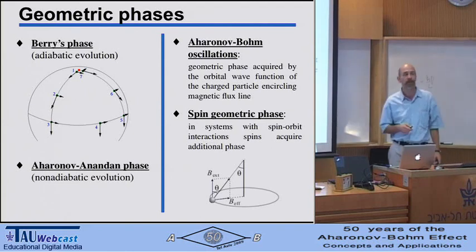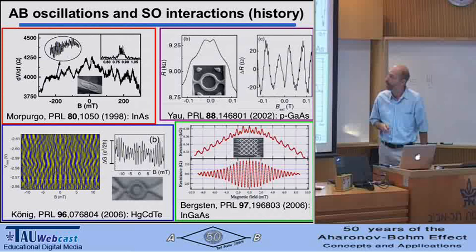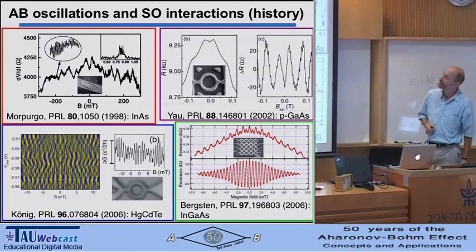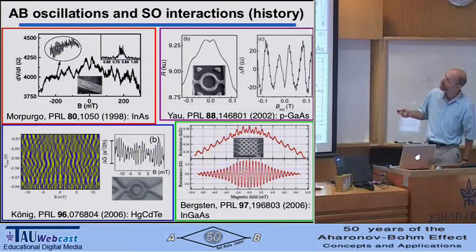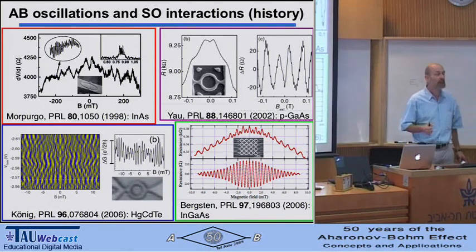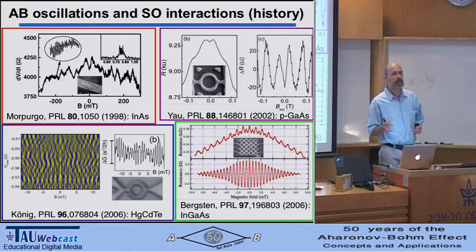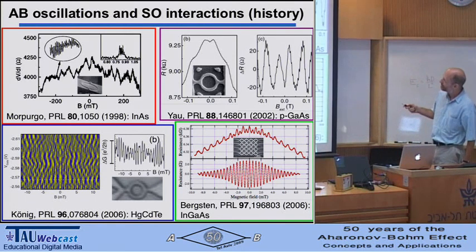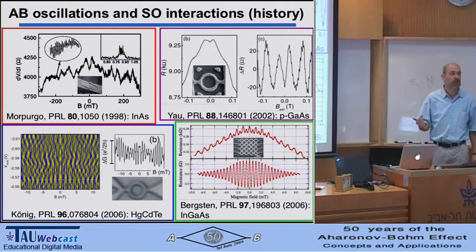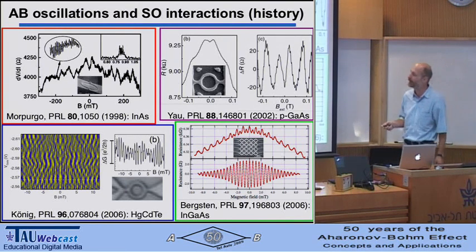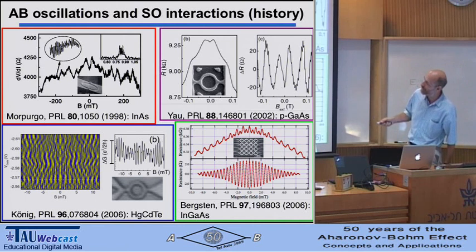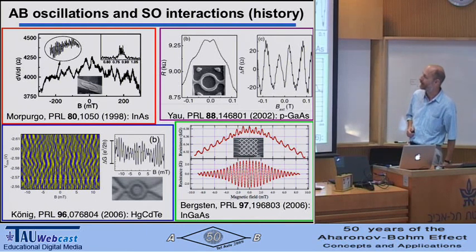The literature is full of theory predictions, and there are four experiments in the literature so far. The different materials include electrons in indium arsenide—which provides very strong spin-orbit interaction in the conduction band—holes in gallium arsenide (holes generally have much stronger spin-orbit field than electrons), another example in a 2-6 semiconductor, and an example in an indium gallium arsenide sample.